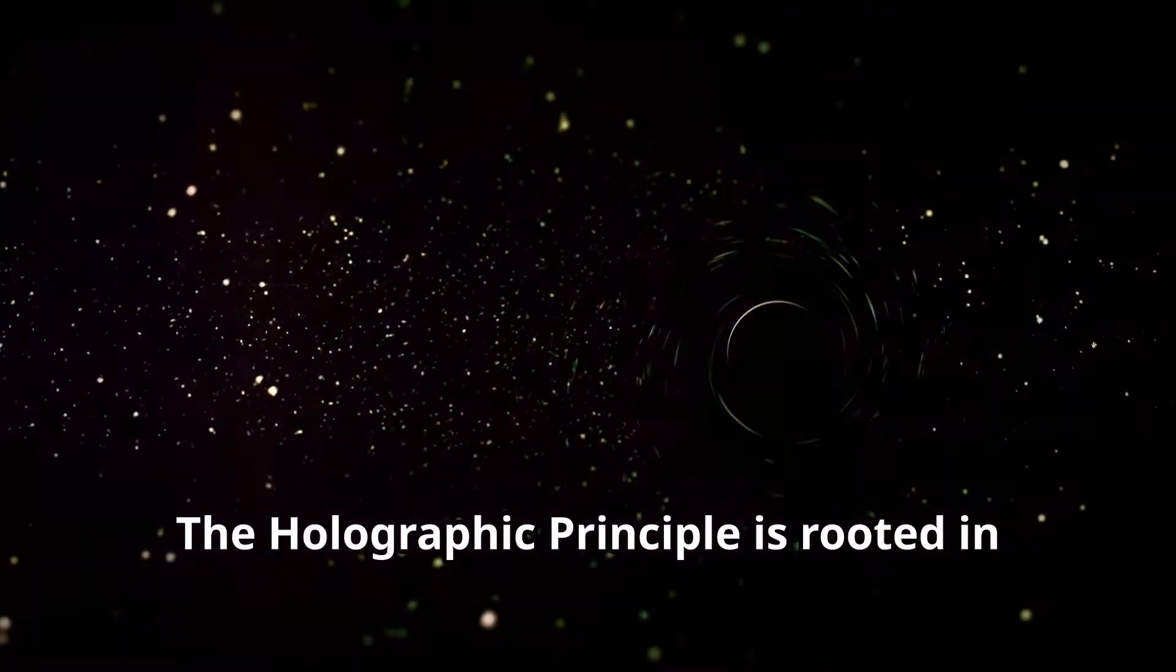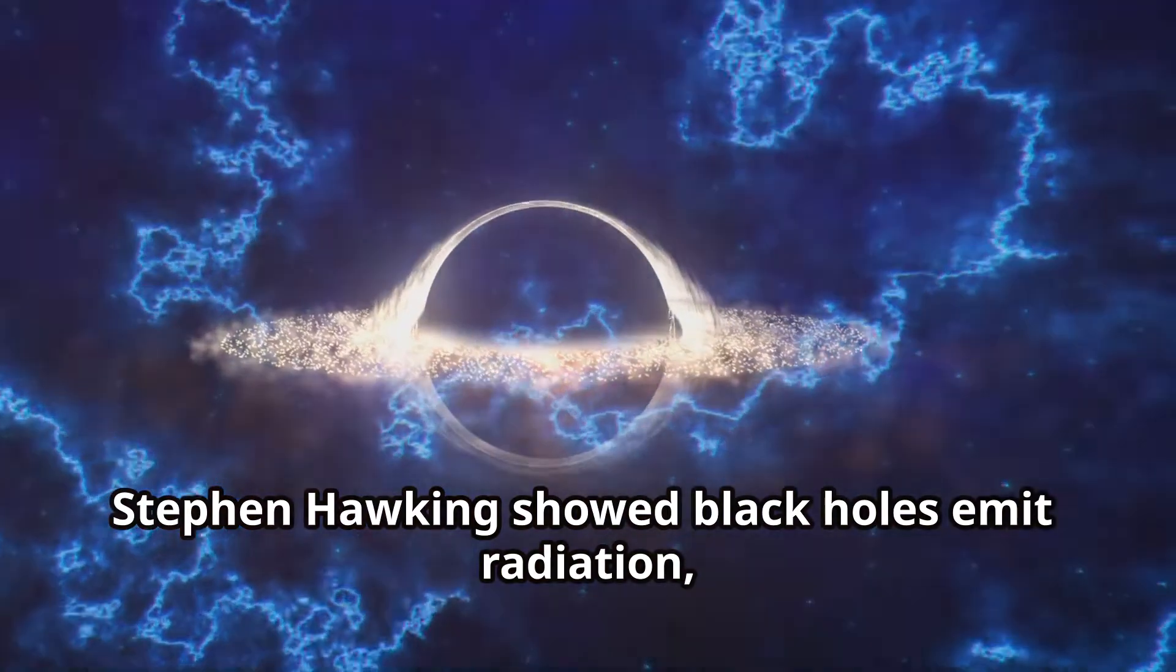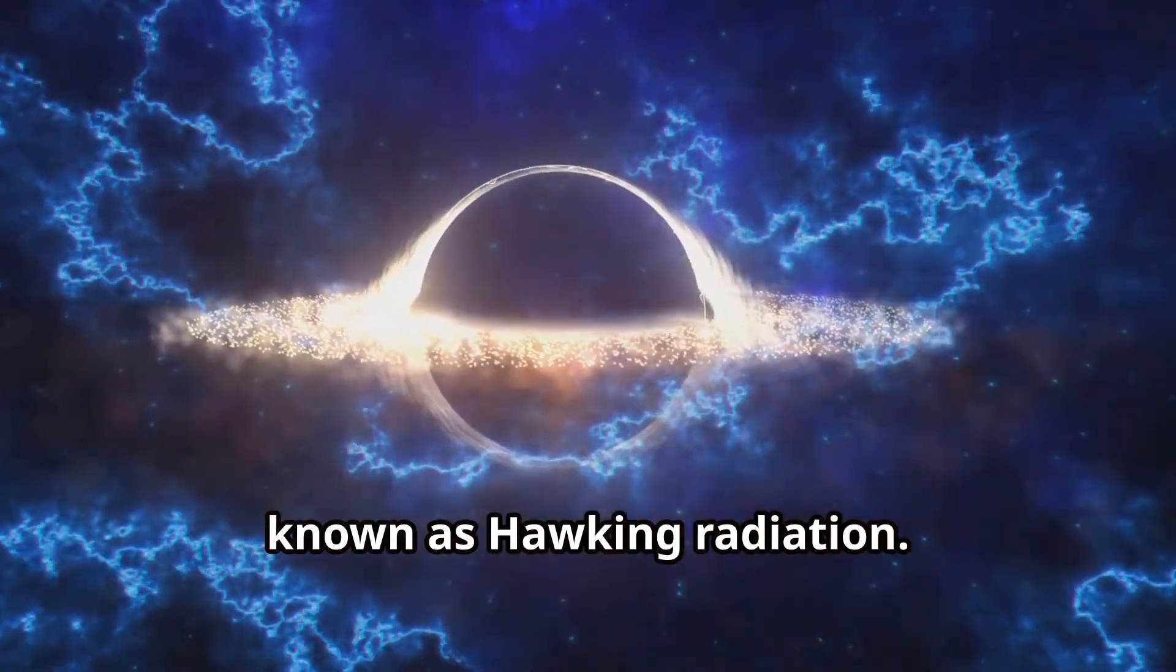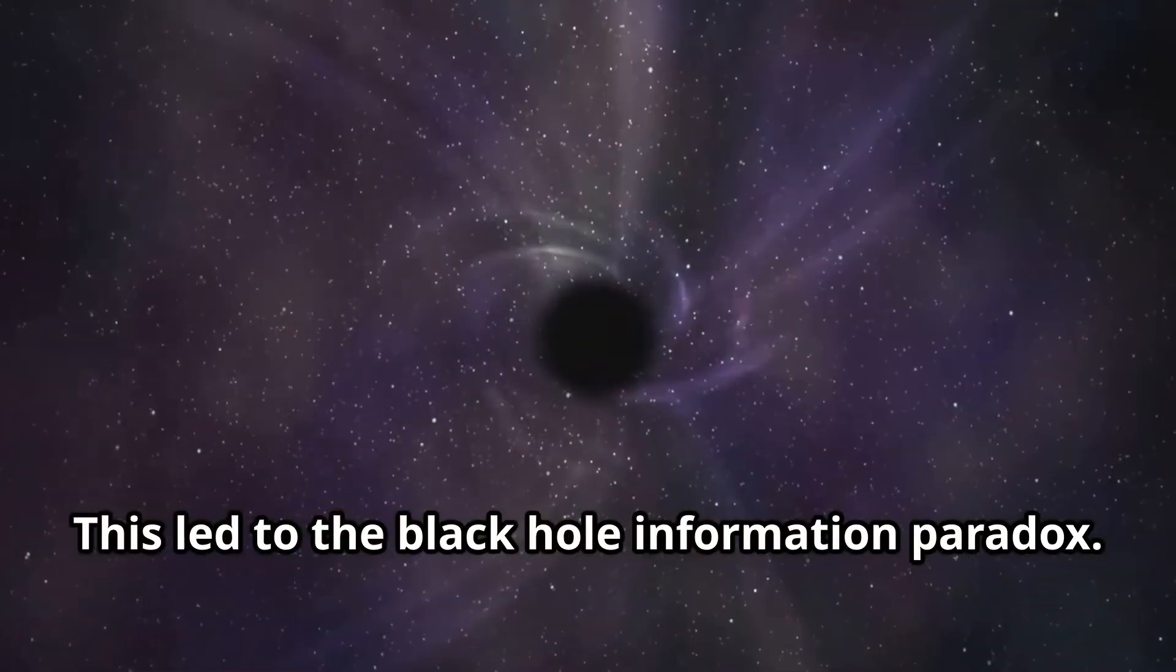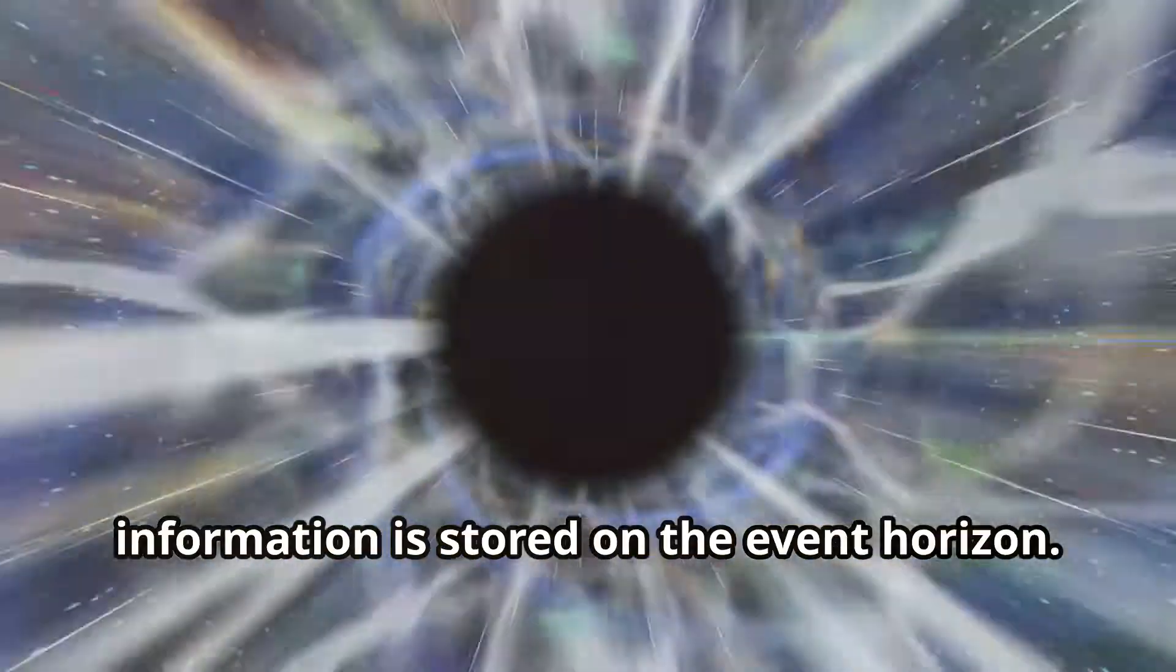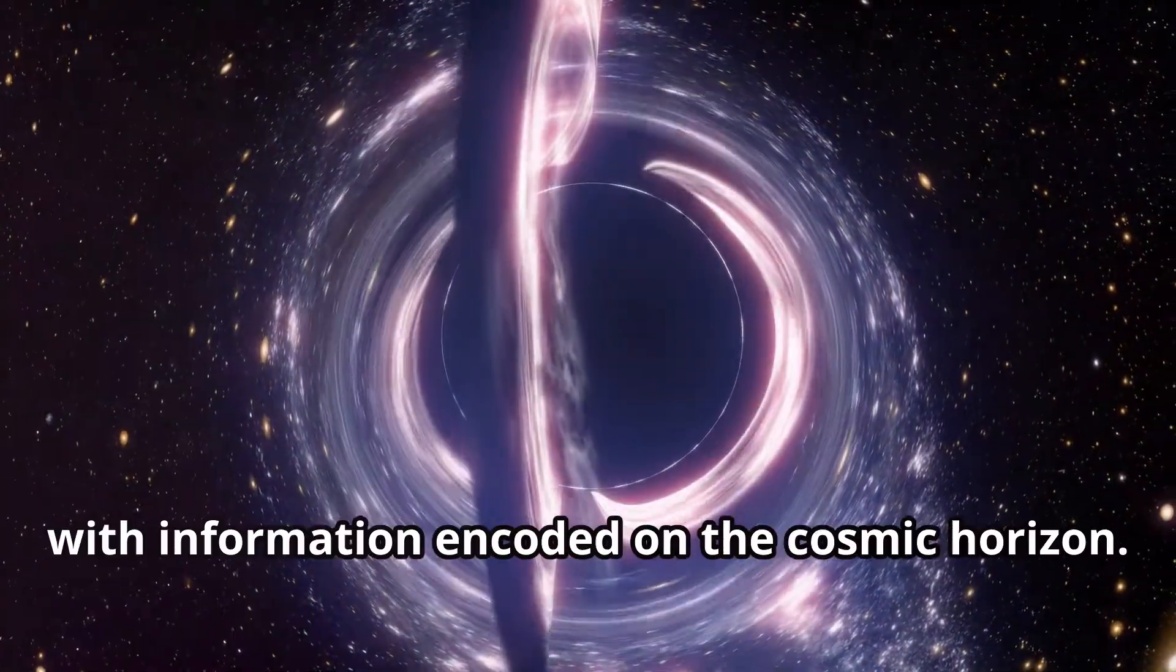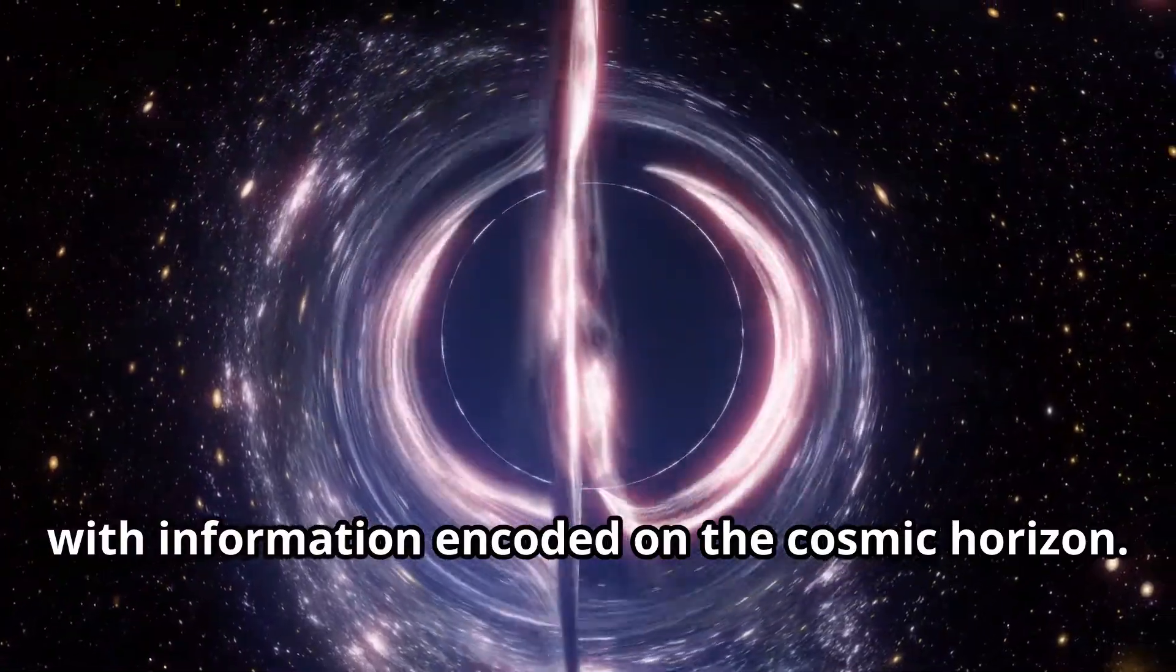The holographic principle is rooted in quantum physics and black holes. Stephen Hawking showed black holes emit radiation, known as Hawking radiation. This led to the black hole information paradox. The holographic principle suggests information is stored on the event horizon. It implies the universe might behave like a black hole, with information encoded on the cosmic horizon.